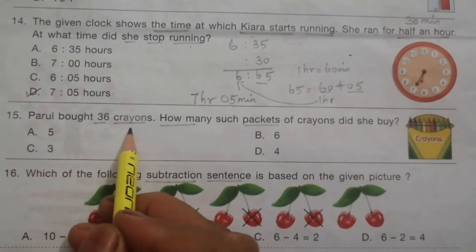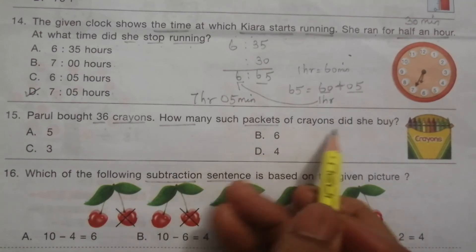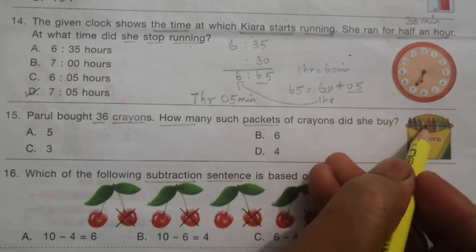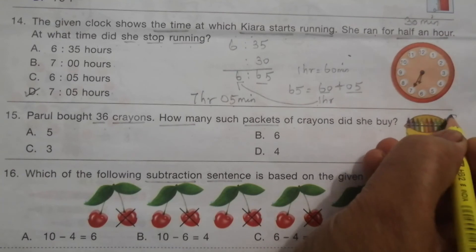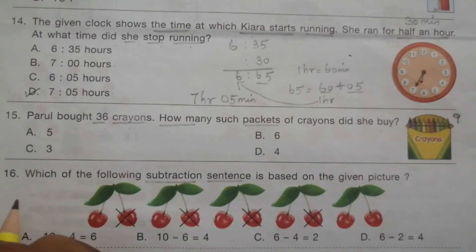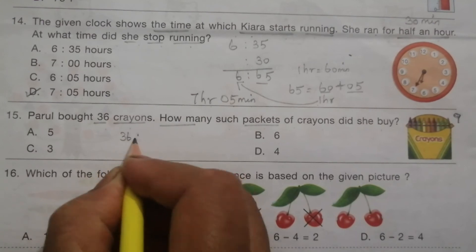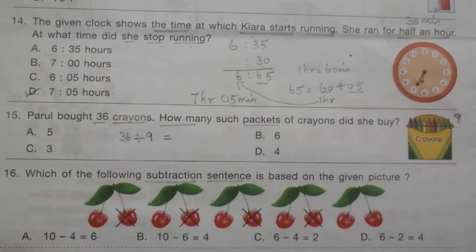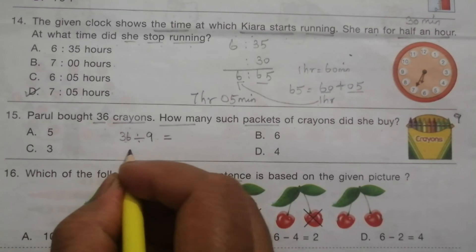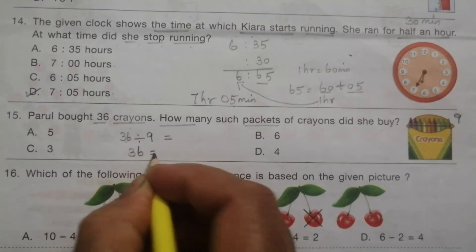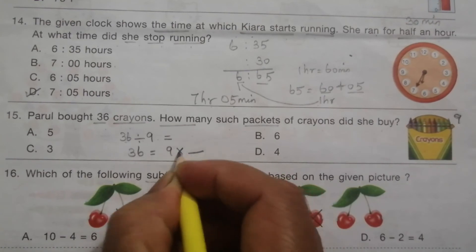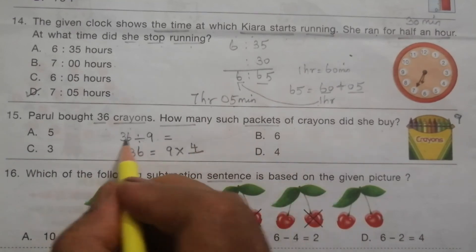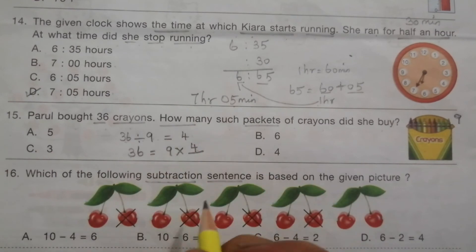Problem 15: Pearl bought 36 crayons. How many such packets of crayons did she buy? This packet contains 9 crayons. To find the answer we divide 36 by 9. 36 divided by 9 equals 4, or 9 times 4 equals 36. So the answer is D, 4.